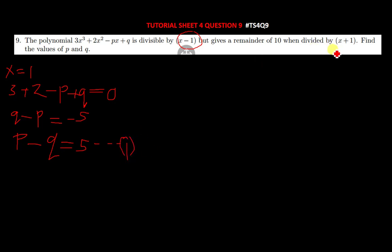Let's quickly find equation 2. Equation 2 is found by dividing by this and equating it to 10, since we've been told the remainder is going to be 10. What we're going to do is say x plus 1 equals 0, so our value of x is equal to negative 1.